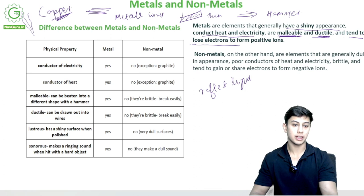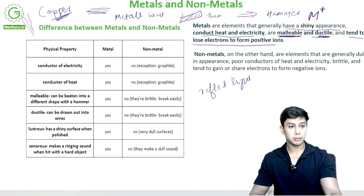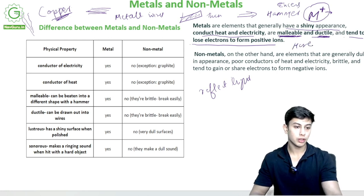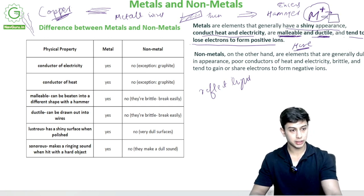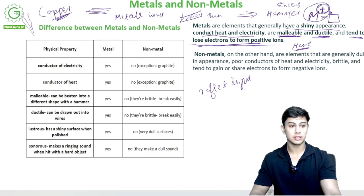Metals tend to lose electrons to form positive ions. If you see a metal M, it will always have a positive ion — it can lose electrons. Metals have excess electrons, so they can give electrons and make a bond with another element. Non-metals, on the other hand, are elements that are generally dull in appearance — they do not shine.